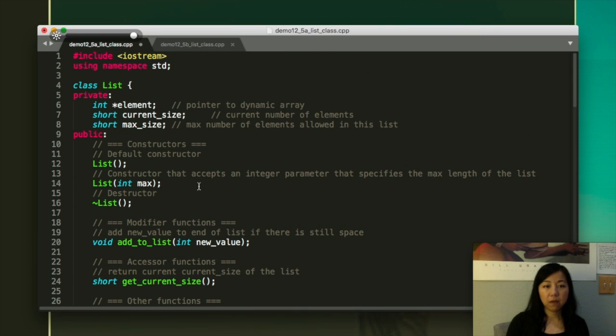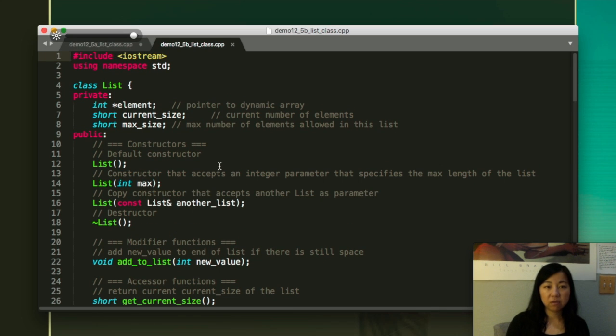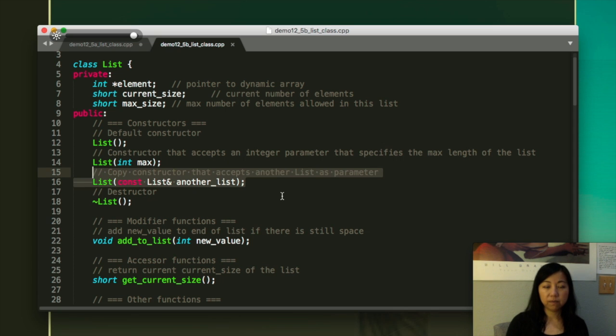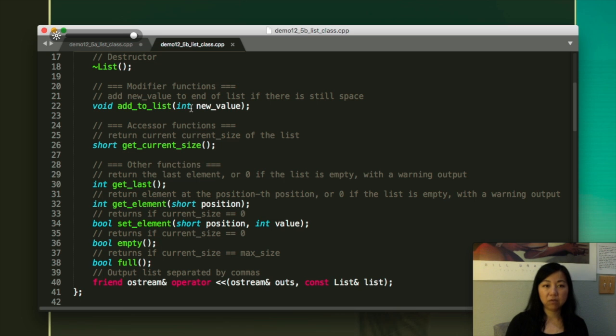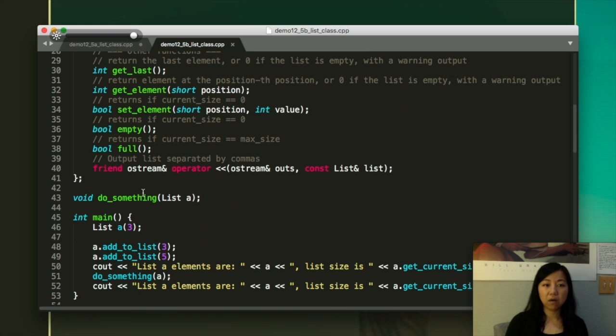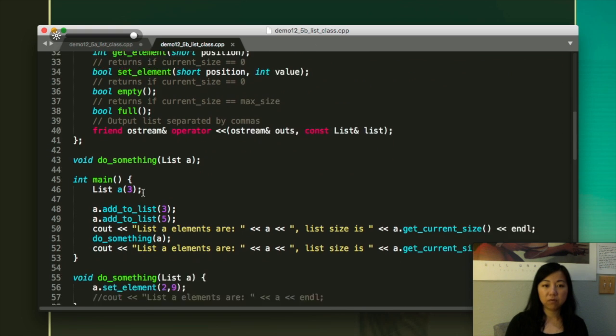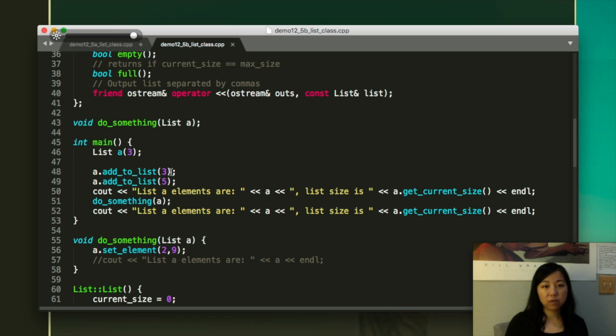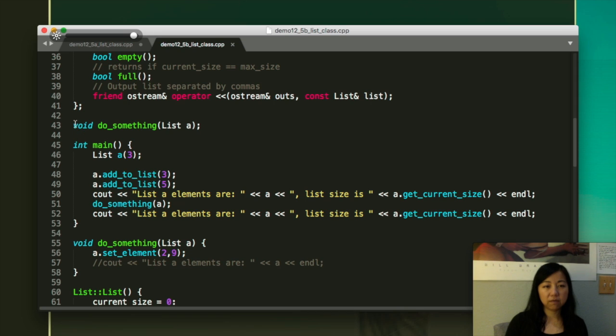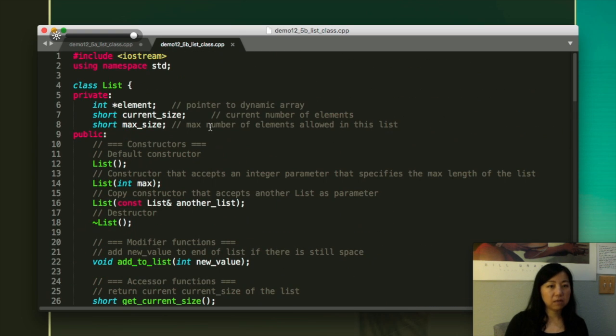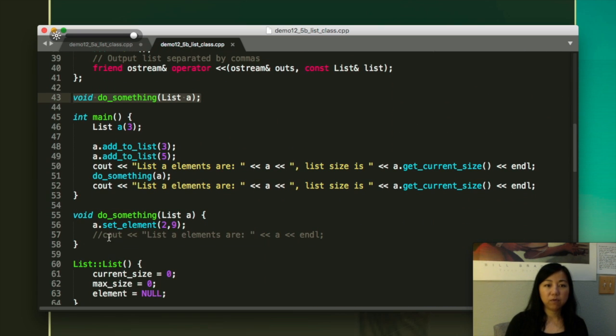So let's look at the code in our text editor. So it's actually this program. Now we have a copy constructor. We actually added more functions to it. Add to list, get current size, get last and so on. I think here right now we only care about the add to list. We are going to add one element to the list. I think we did that also in the last video. Do something function. This is outside of the class definition, is actually an independent function. And when we implement it, we will try to actually change a, which is passing as pass by value and set the second element to nine.